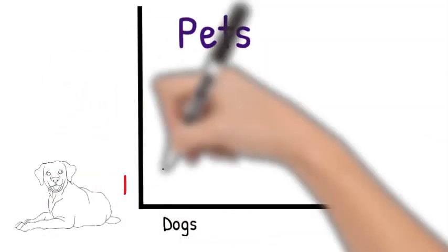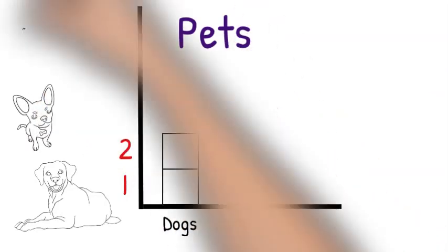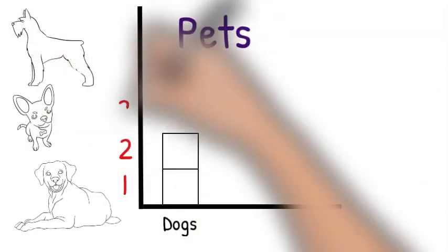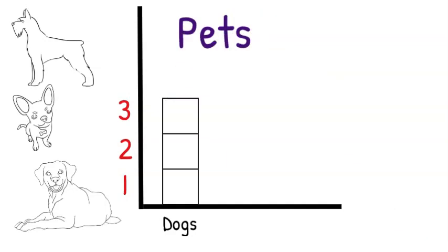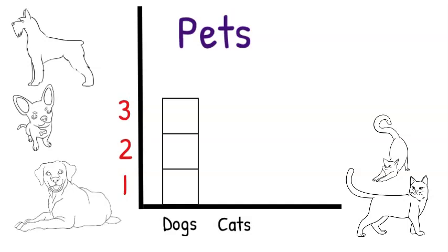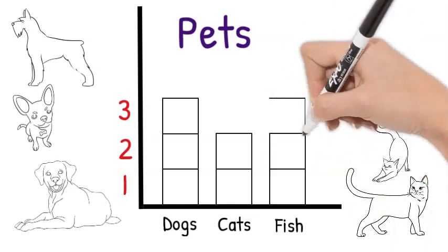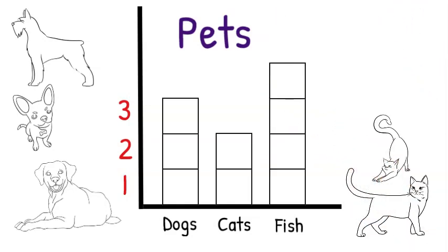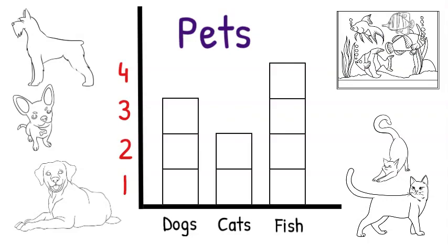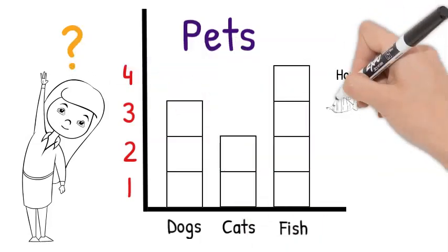One dog, one box. Two dogs, two boxes. Each box represents one dog. If there are two cats, how many boxes do we need? Right, two! What about fish? Four boxes means four fish. Ready for a question? How many more fish than cats?